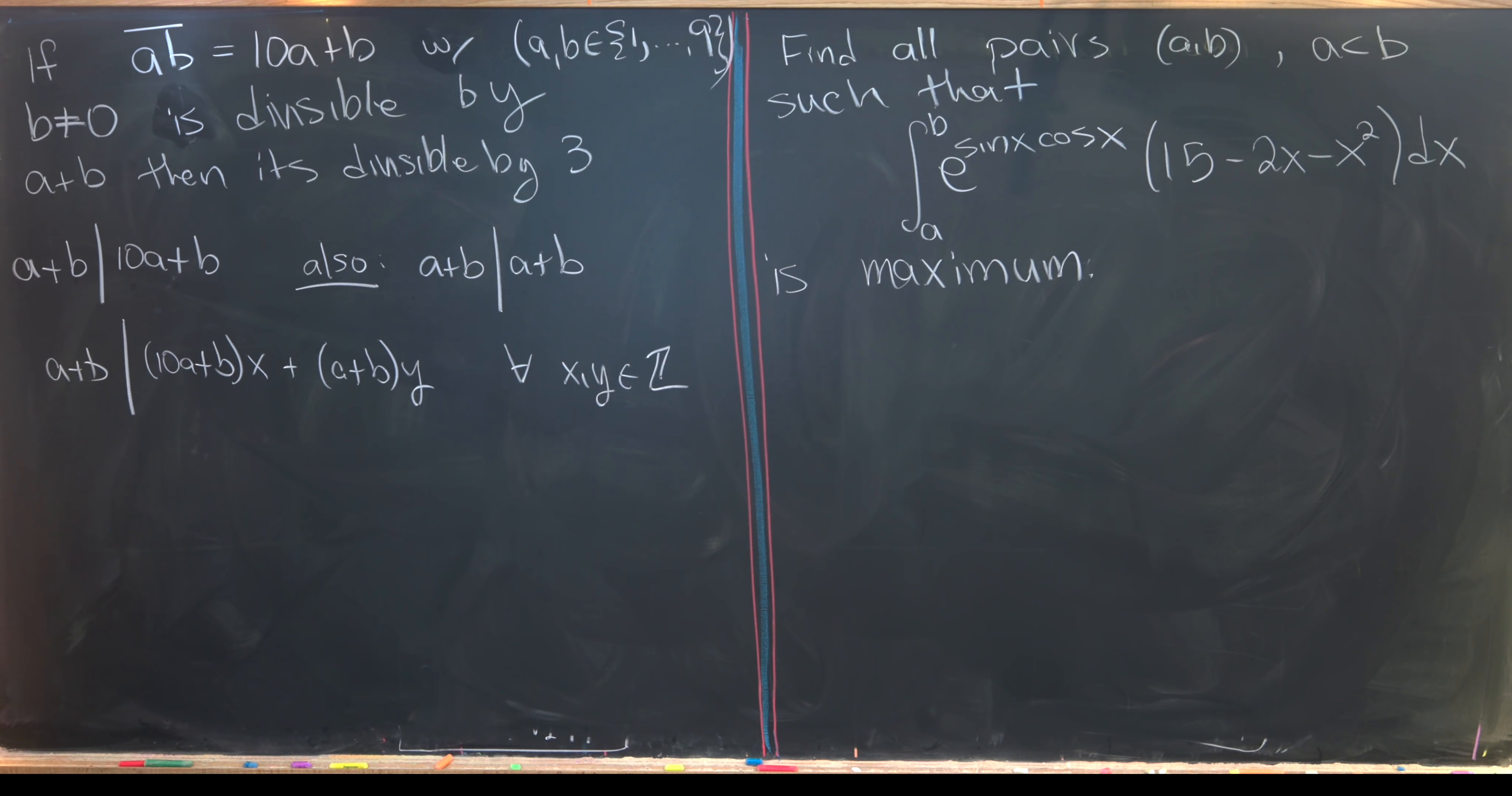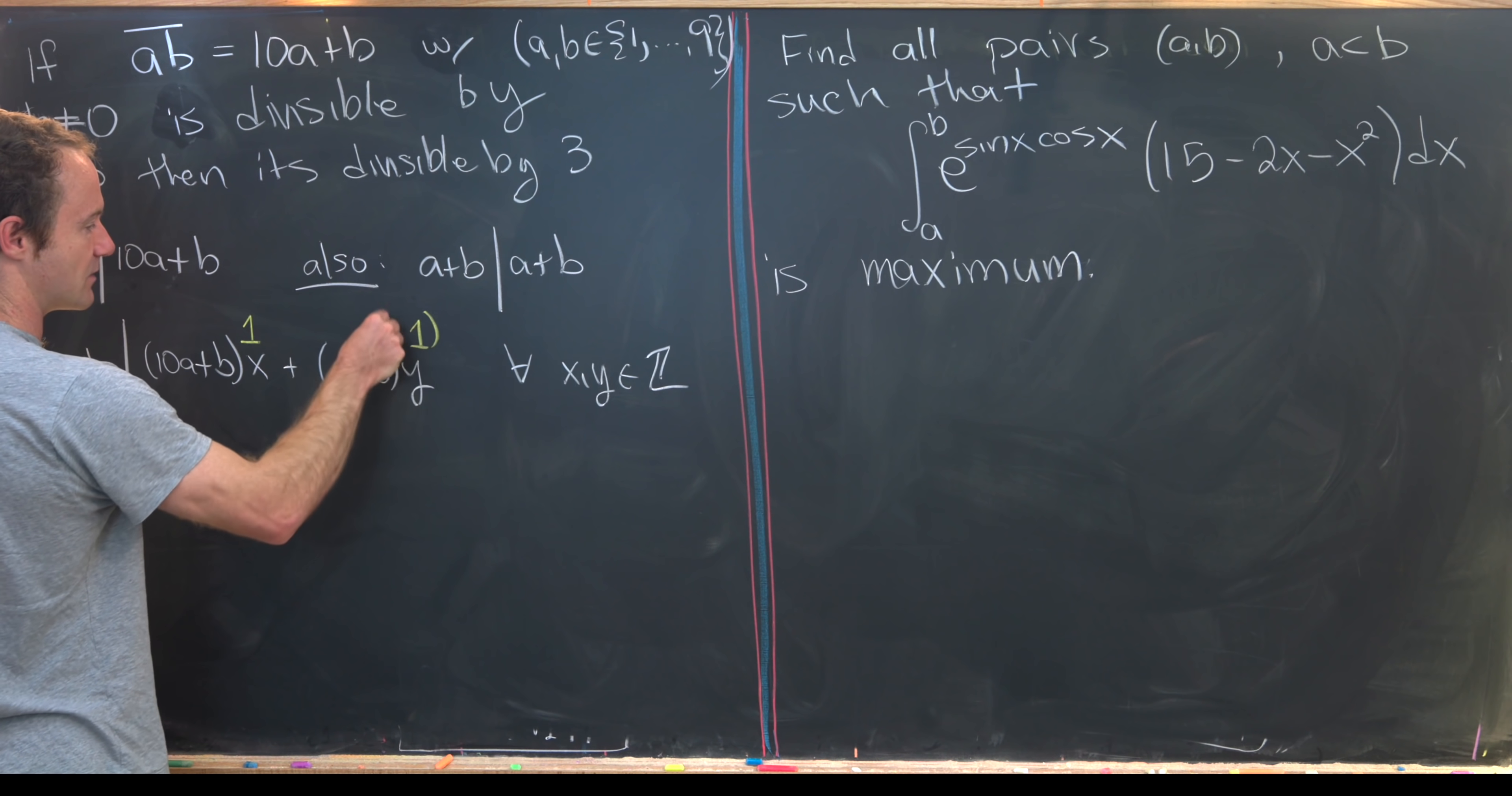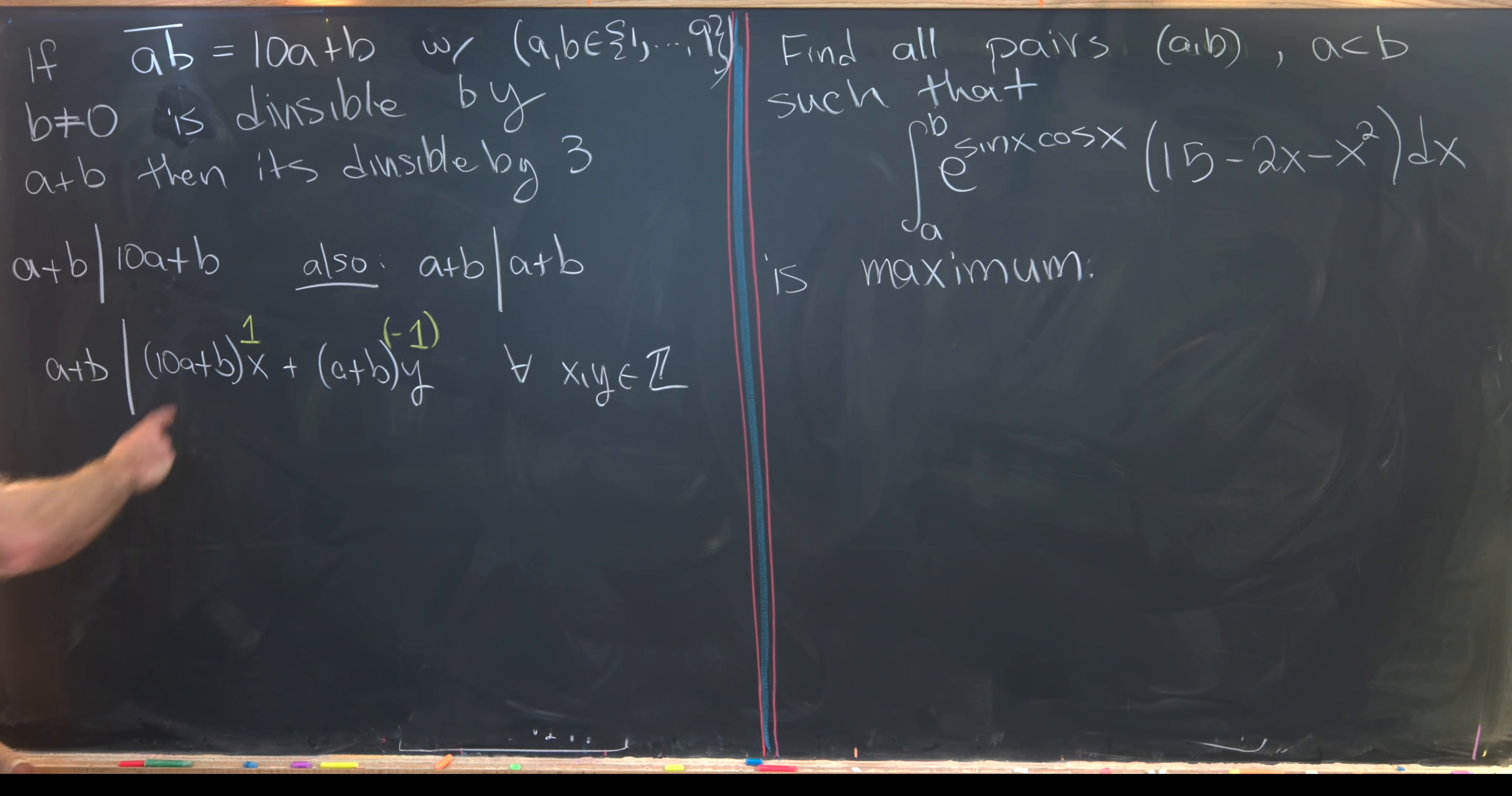Now we just want to choose x and y appropriately. So we'll choose x to be the number one, and we'll choose y to be the number negative one. Why would we want to do that? Because that cancels out this b. I guess there's maybe another choice that you could think about, but I'll let you guys think about what another good choice for x and y would be. So that leads us to see that a plus b divides 9 times a, because we've got 10 times a minus a, and then b minus b.